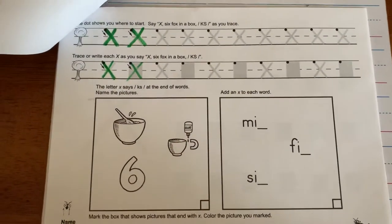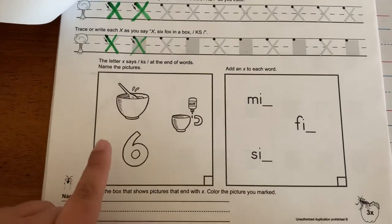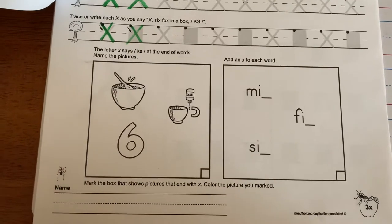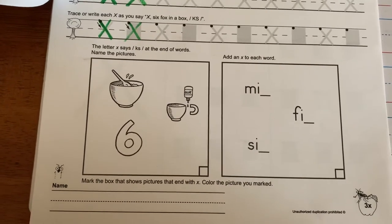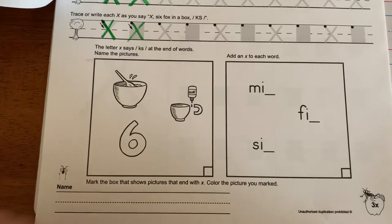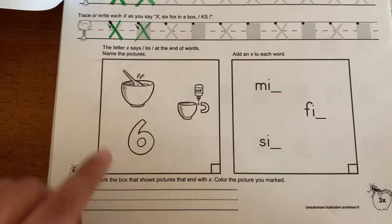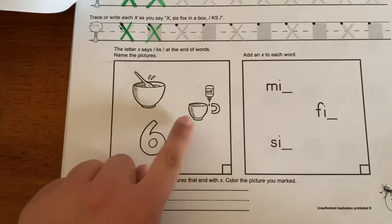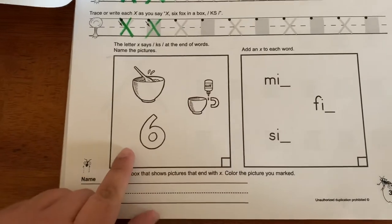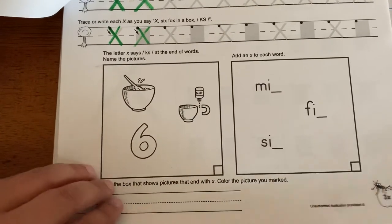Circle your neatest X. Down here, you're gonna name the pictures. Then you need to add an X to the ones that are missing. So we have a mix, fix, and six. Go ahead and do those.